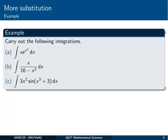Here's three examples we're going to look at. First, x times e to the x squared, then x divided by 16 minus x squared, and finally 3x squared times sine of x cubed plus 3. Without even going into these, I'm going to look at them and see if they fit the right format. Maybe pause for a second and see if you can see a function and its derivative appearing in each of these integrands.